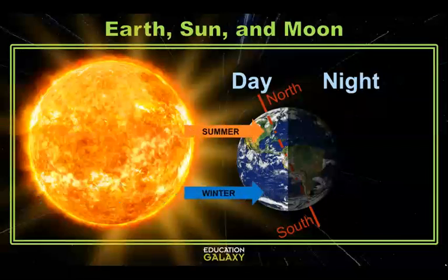The area getting the most direct sunlight experiences summer. This is the side of the Earth that's pointed towards the Sun. The side pointed away from the Sun has fewer hours of daylight and experiences winter.